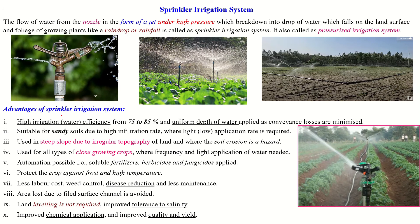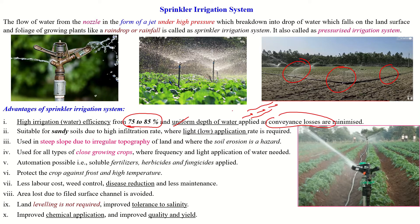Let us see the advantages of sprinkler irrigation system. The higher irrigation efficiency is 75 to 85%, and a uniform depth of water can be applied over the entire field, so there is no uneven distribution of water. As a result, higher application efficiency is achieved and conveyance losses are minimized. In the surface irrigation system, water is carried from higher to lower elevation, creating chances of seepage and evaporation losses, resulting in higher conveyance losses. But in the sprinkler system, conveyance loss is very minimum.